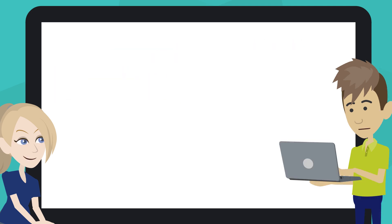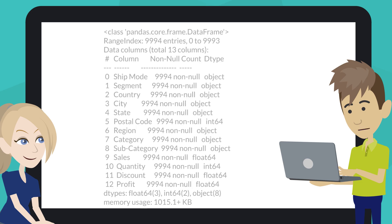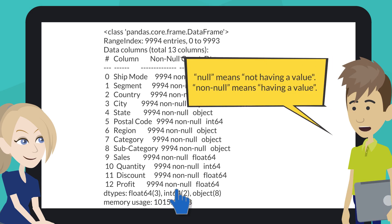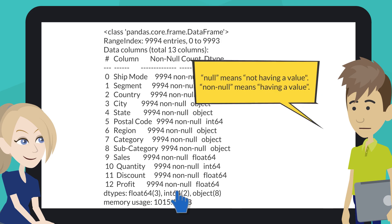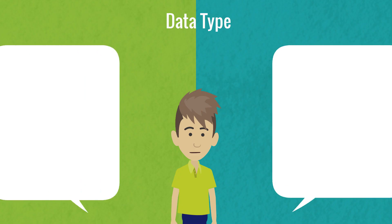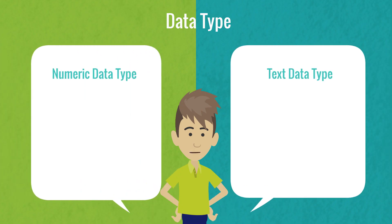Click on the play button or hit Shift + Enter. What is non-null? Null means not having a value; non-null means having a value. There are two main types of data: numeric and text data types.